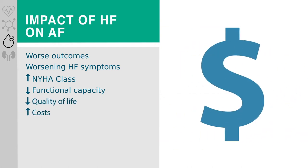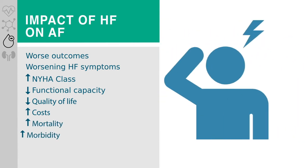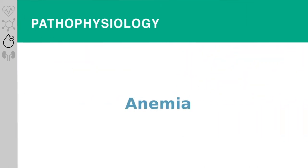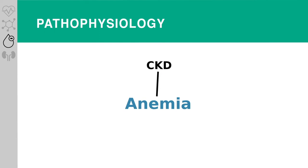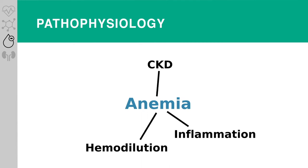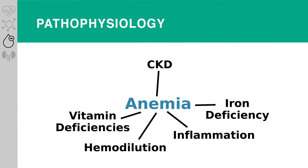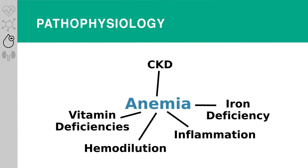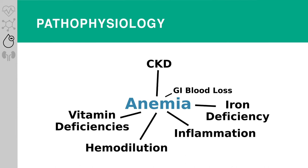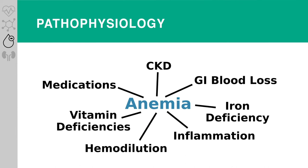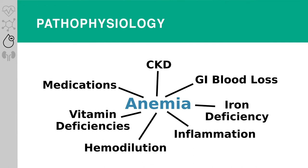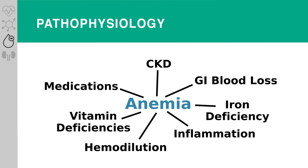Anemia is associated with higher costs of hospitalization for patients with heart failure. A decline in hemoglobin over time is also associated with mortality and morbidity. The underlying pathophysiology is complex, with main mechanisms including chronic kidney dysfunction, inflammation, hemodilution, absolute or relative iron deficiency, nutritional deficiencies such as vitamin B12, folic acid, and thiamine deficiency, gastrointestinal blood loss, and certain therapeutic agents such as ACE inhibitors that have a generally low effect on hemoglobin levels.